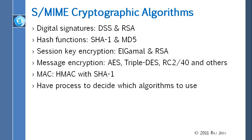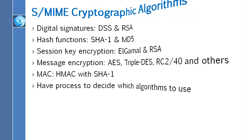Just like PGP, S-MIME has selected certain algorithms: for signatures, DSS and RSA; for hash functions, SHA-1 and MD5; for session key encryption, ElGamal and RSA; for message encryption, AES, Triple-DES, RC2-40, and others; and for MAC, HMAC with SHA-1. There is also an algorithm to decide which algorithm to use for a given process. Programs like Outlook will just handle this for you automatically.